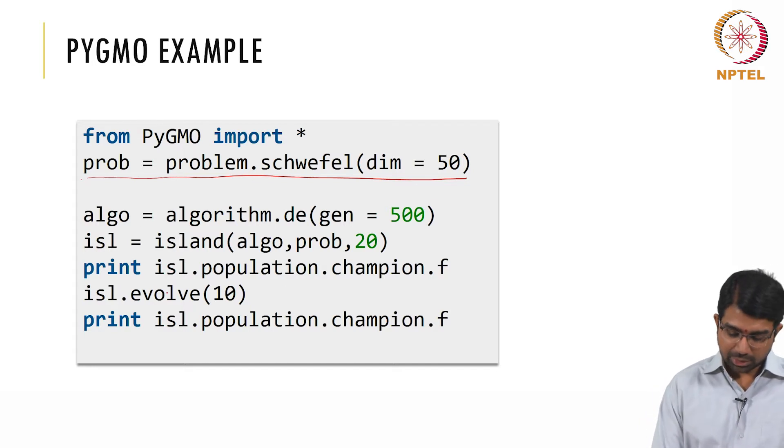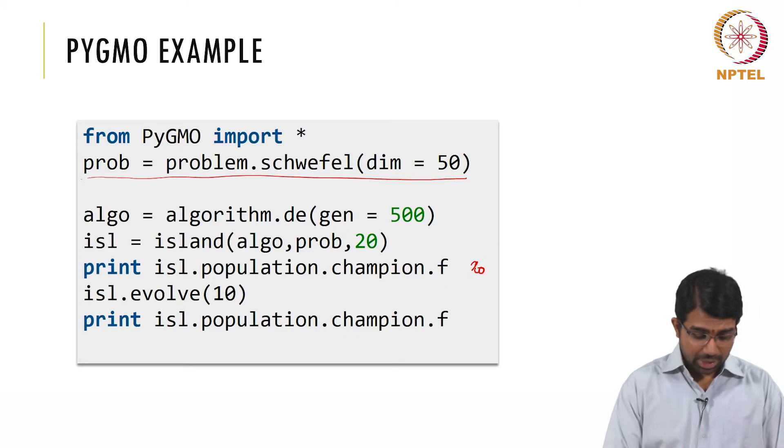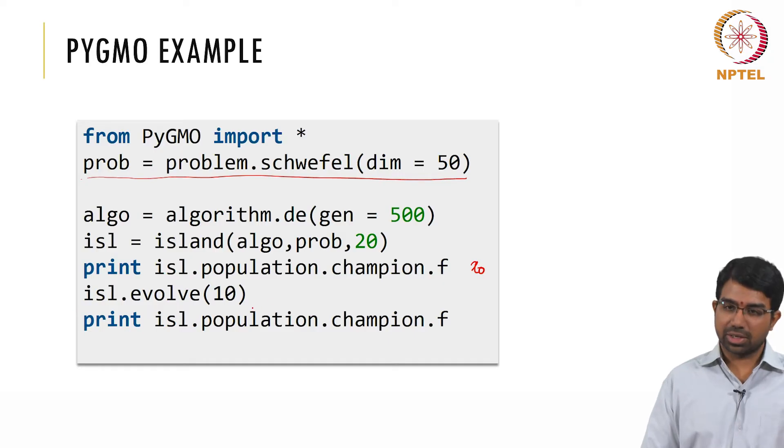What is the function value of the champion in the population in all islands. And so this is basically the initial value, this is essentially saying print x0. Now you evolve it for 10 generations or longer and then you print the champion across all those epochs.